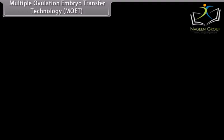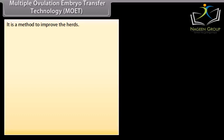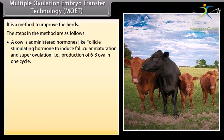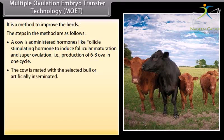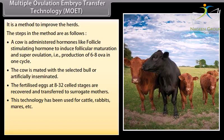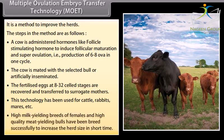Multiple ovulation embryo transfer (MOET) technology is a method to improve herds. A cow is administered hormones like follicle stimulating hormone to induce follicular maturation and super ovulation, producing 6 to 8 ova in one cycle. The cow is mated with a selected bull or artificially inseminated. The fertilized eggs at 8 to 32 cell stages are recovered and transferred to surrogate mothers. This technology has been used for cattle, rabbits, mares, etc., to increase herd size in the short term.